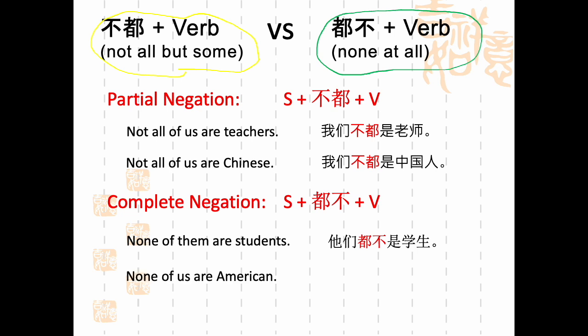他们都不是学生. Let's try one more. 中文怎么说？None of us are American. You could say 我们都不是美国人.